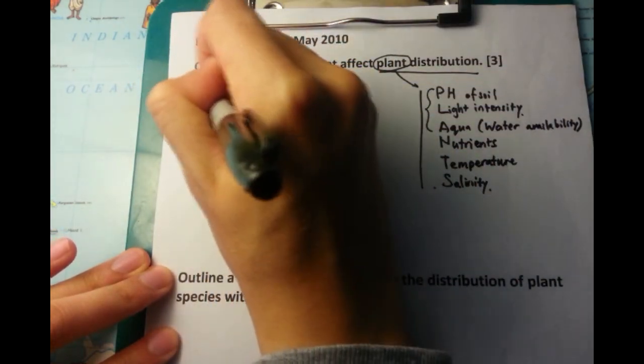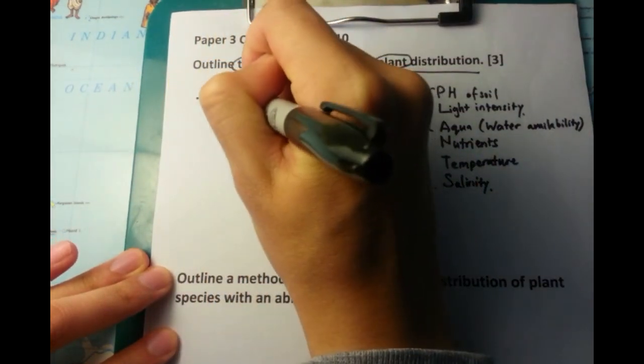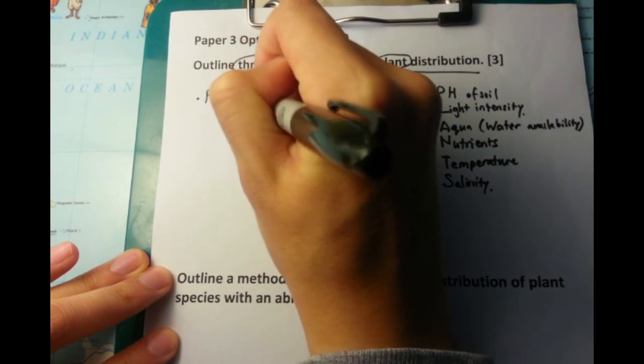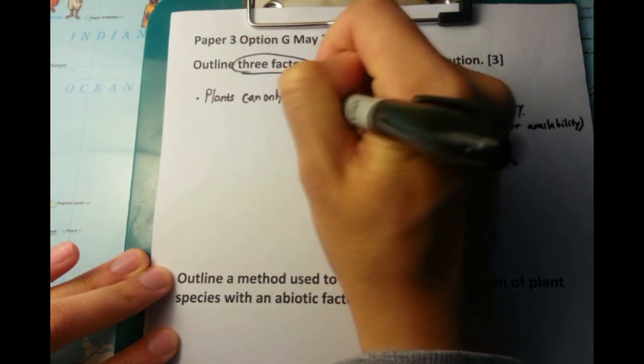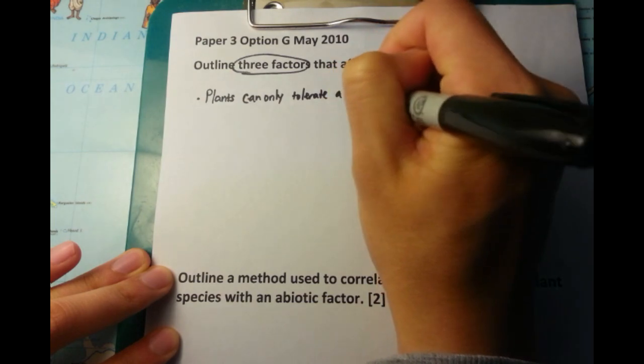With pH, plants can only tolerate a narrow pH range. If it's too acidic, they're not happy. If it's too basic, they're not happy either. Quite simple.